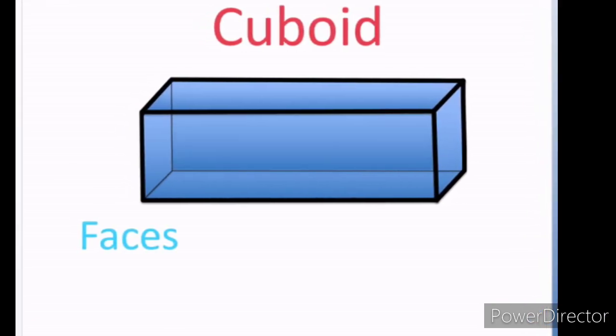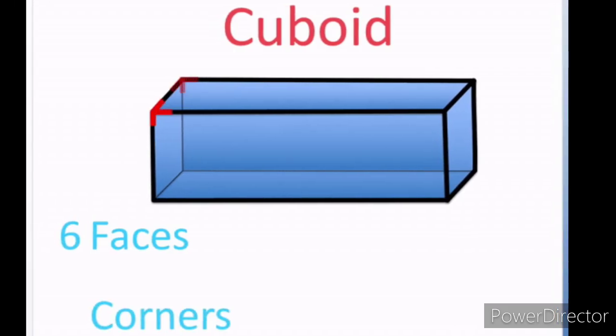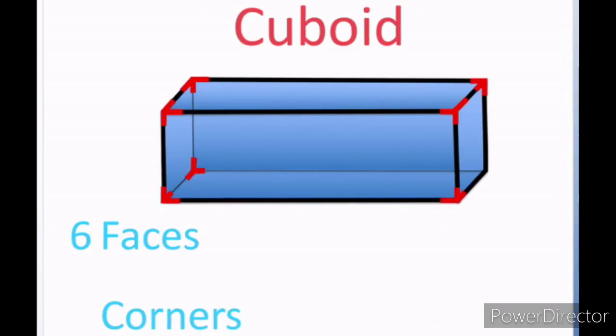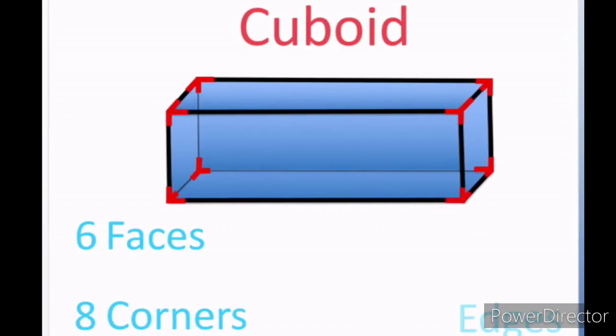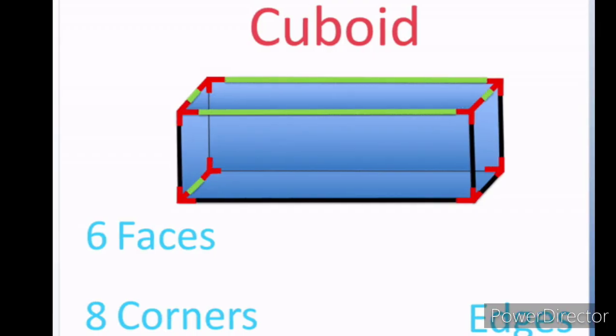So the highlighted part is nothing but a face. Next, the red marks are nothing but corners. Cube and cuboid are similar.